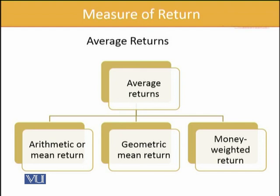There are many ways in which the average return can be calculated. One is the simple arithmetic mean — we take the values and divide by the number of periods. Then there is the geometric mean, which we just did, where we take the multiplicative effect — it captures the compounding factor. Another method is the money-weighted return, which is beyond our specific scope because for that you need a proper financial calculator or a spreadsheet; it cannot be done by normal calculation. But this method also exists.